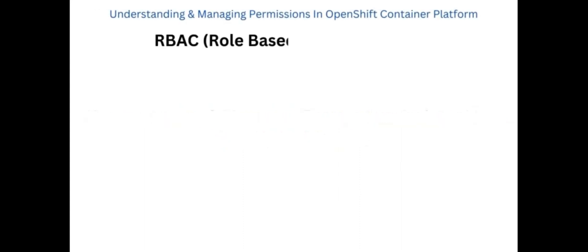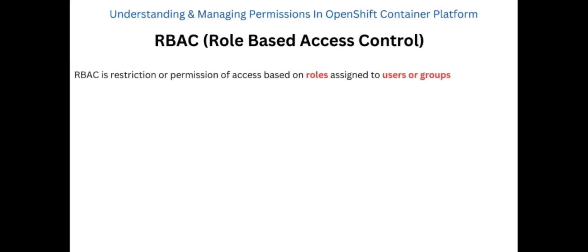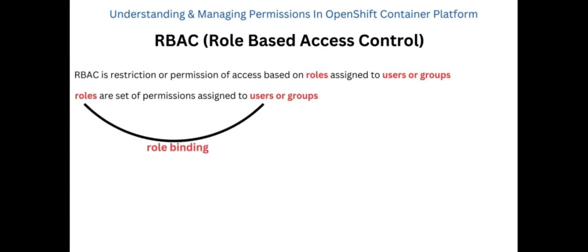When it comes to permissions in OpenShift, OpenShift uses RBAC — that is, role-based access control. RBAC is basically a method of restricting access based on the roles that are assigned to individual users or groups in the cluster. Roles are a set of permissions assigned to users or groups to perform certain API operations, and these roles are added or assigned to a user via role binding.